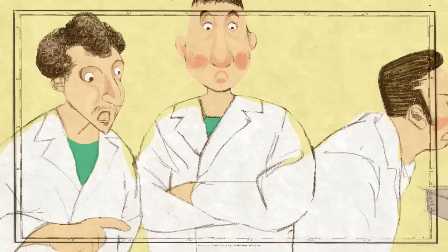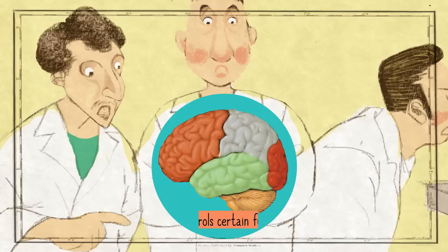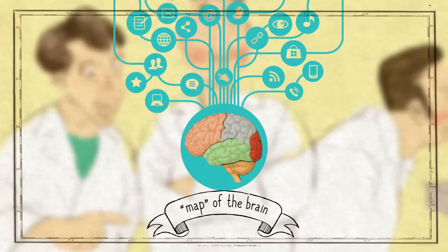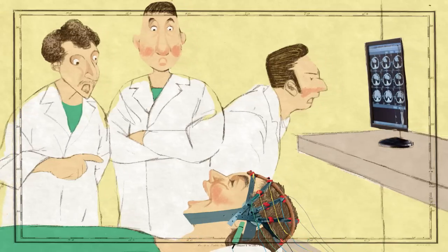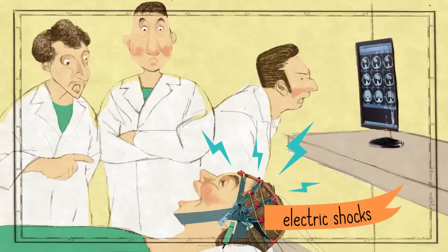Well, doctors wanted to find out which parts of the brain control certain functions by making a map of the brain. By using small electric shocks on the brain,